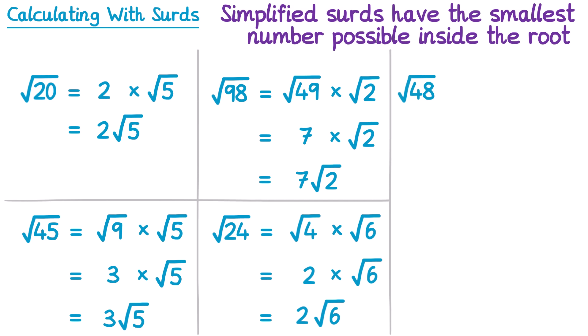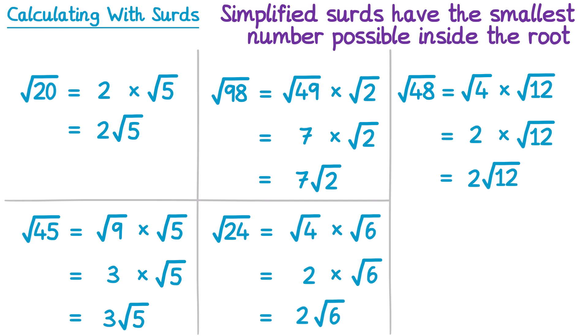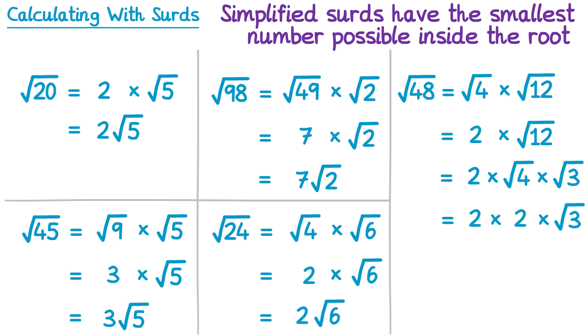Now let's simplify the square root of 48. I can see that 4 goes into it, so I'll split it as the square root of 4 times the square root of 12. The square root of 4 is 2, giving 2 root 12. But the square root of 12 can also be simplified — splitting into the square root of 4 times the square root of 3. That square root of 4 is 2, so we get 2 times 2 times the square root of 3. Multiplying those together: 2 times 2 is 4, so this is 4 root 3. This is now fully simplified because there are no square numbers that are factors of 3, apart from 1.